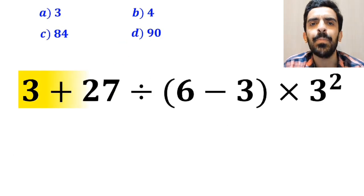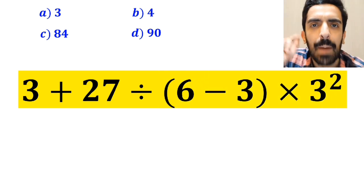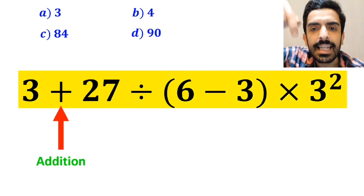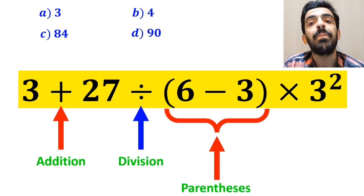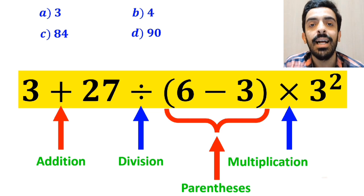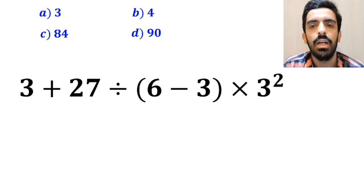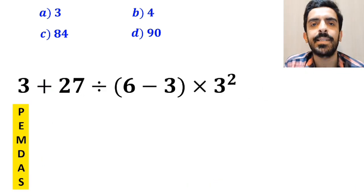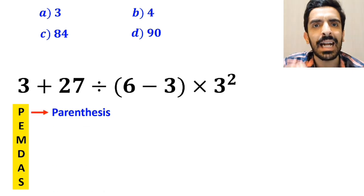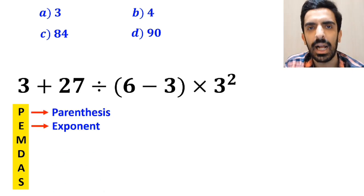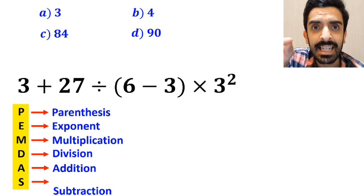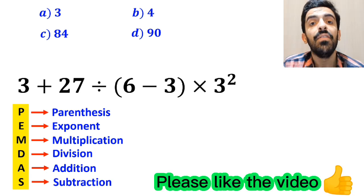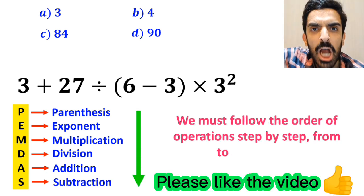Now let me explain step by step how to solve this expression properly. In this expression, we have an addition sign, then a division sign, followed by parentheses, then a multiplication, and finally an exponent. To solve this problem, we must follow the PEMDAS rule. P stands for parentheses, E stands for exponent, M stands for multiplication, D stands for division, A stands for addition, and S stands for subtraction. We must follow the order of operations step by step from top to bottom.